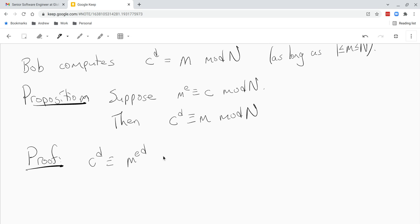Okay. That's m to the 1 plus k times phi n. Where? This is just because e d is congruent to 1 mod phi n.